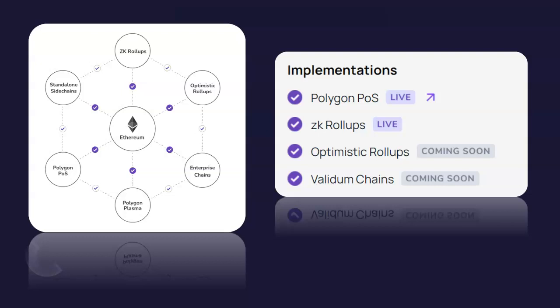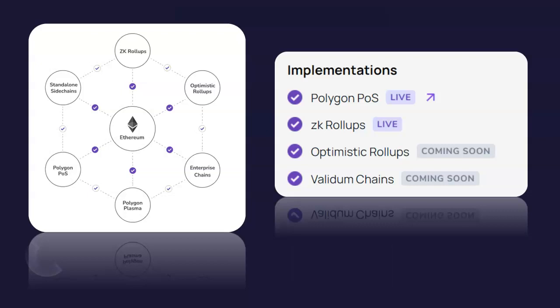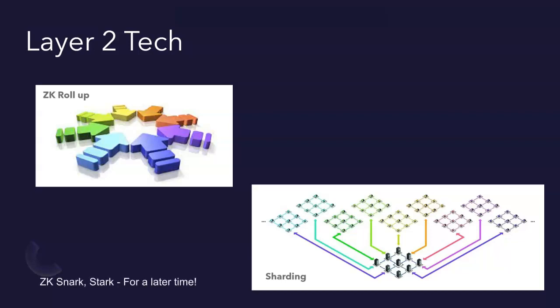Now, what problem is Polygon solving? As you can see on the left side, you have Ethereum with multiple solutions, and the purple ticks are where the Polygon network really comes in — attaching a complete Layer 2 solution on top of Layer 1, which is Ethereum. On the right side, Polygon POS is live, ZK rollups is live. Optimistic rollups and Validium chain are going to come soon. ZK rollups and sharding are the two main concepts. ZK rollups, which has been adopted by Polygon, requires an aggregator — a set of data points need to be transferred from point A to point B with a validator in between before it reaches point B.